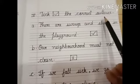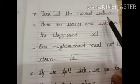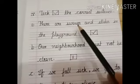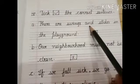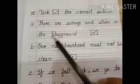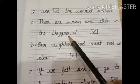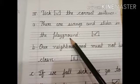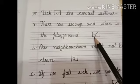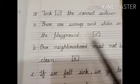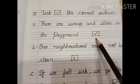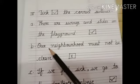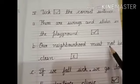Our next exercise is to tick the correct sentence. A. There are swings and slides in the playground. Is it correct, children? Yes, this is correct.